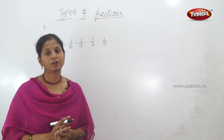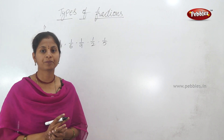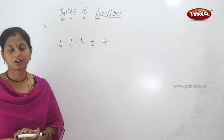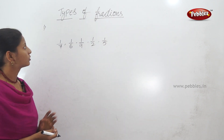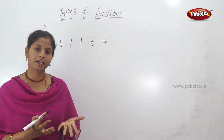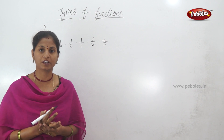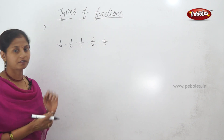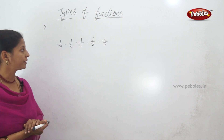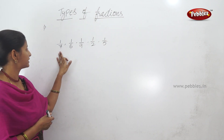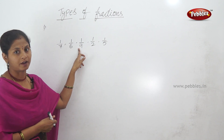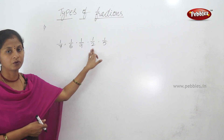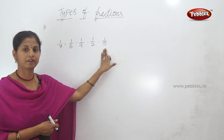So, fractions — what do we know? Today, there are types of fractions. Now, here we know some fractions: 1 by 7, 1 by 6, 1 by 9, 1 by 2, and 1 by 5.